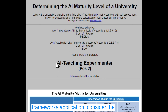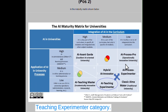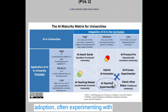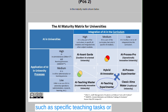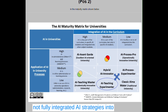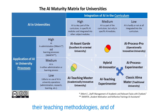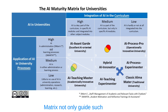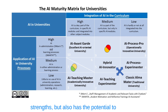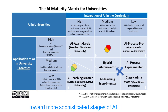To illustrate the framework's application, consider the Teaching Experimentator category. Universities classified under this category are at the early stages of AI adoption, often experimenting with AI in limited, isolated scenarios, such as specific teaching tasks or learning content. While they may recognize AI's potential, they have not fully integrated AI strategies into their teaching methodologies, and AI remains notably absent from their institutional frameworks. The matrix not only guides such universities in identifying their strengths, but also has the potential to encourage advancement toward more sophisticated stages of AI maturity.